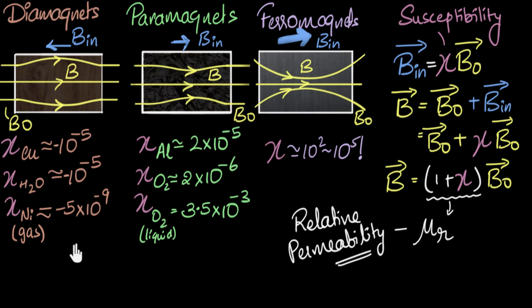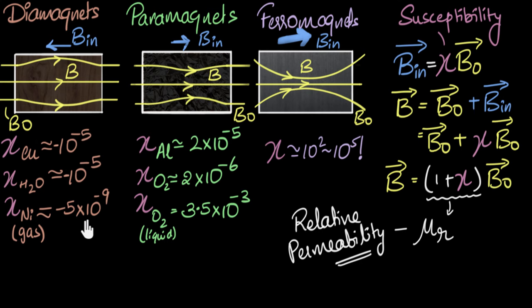Before we leave, a fun fact: there are certain diamagnets — I won't say which, I want you to research it — that have a chi value of negative one. They're called perfect diamagnets. What does it mean to have χ = −1? What would their permeability be? What would the magnetic field inside be? What are the implications, and which materials are these? Do some research around that.